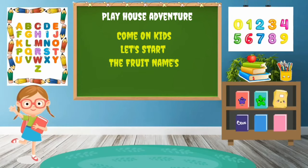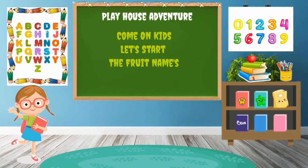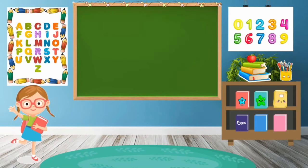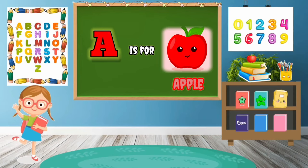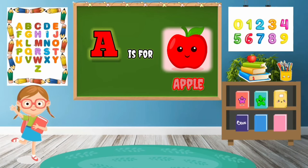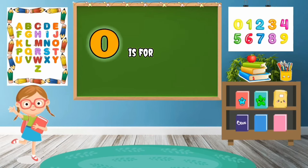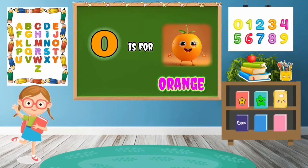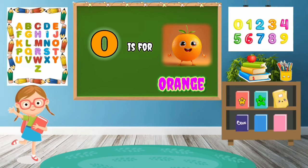Come on kids, let's start the fruit's names. Okay, so please sing with me — fruit's names! A is for Apple, A-P-P-L-E, Apple. O is for Orange, O-R-A-N-G-E, Orange.